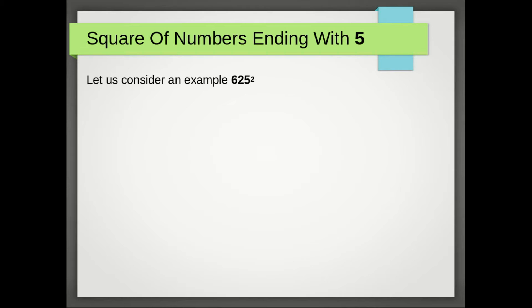Now let us consider another example: 625 square. First step: remove last digit 5 from the given number.